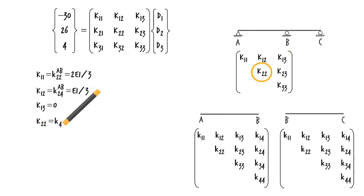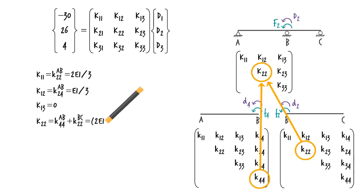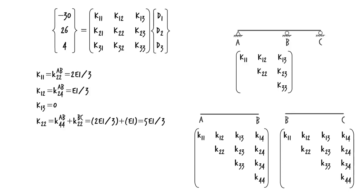K22 equals K44 of AB, plus K22 of BC, or 2EI over 3 plus EI, or 5EI over 3. K23 equals K24 of BC, or EI over 2.